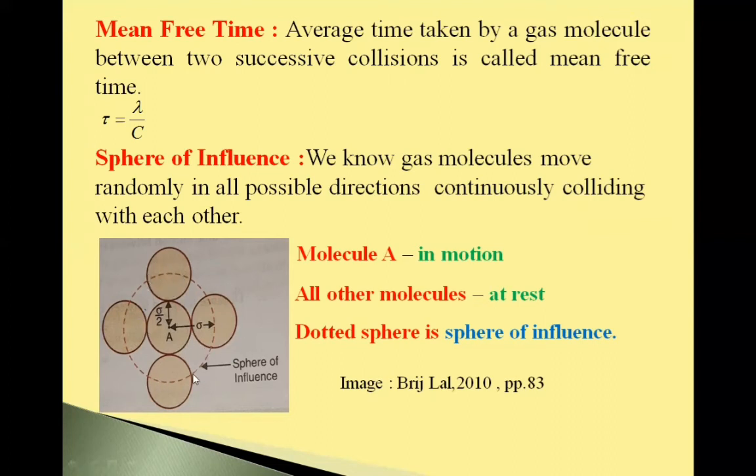The A molecule is in motion and all other molecules are stationary, at rest. If we draw a circle of radius σ and center A like this, this circle is called sphere of influence. Its radius is σ and center at A.